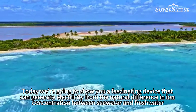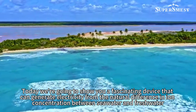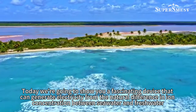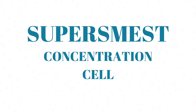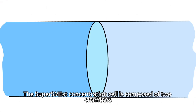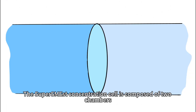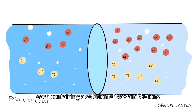Today, we are going to show you a fascinating device that can generate electricity from the natural difference in ion concentration between seawater and freshwater. This device is called a super-smast concentration cell, and it is one of the most promising technologies for sustainable energy. The super-smast concentration cell is composed of two chambers, each containing a solution of sodium and chlorine ions.